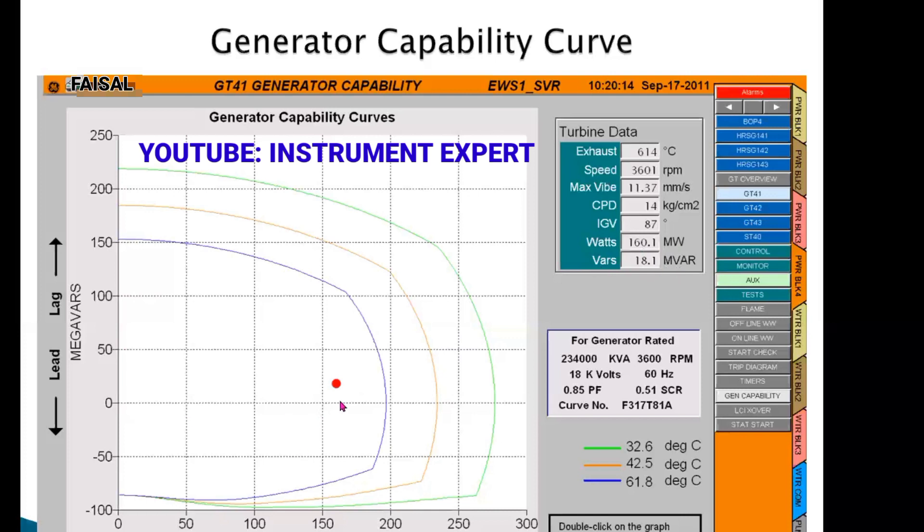If you go in the positive direction, then we want to supply the VAR or deliver the VAR to the system. Then we run our generator in over excitation mode.